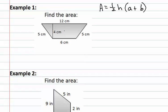As you can see, the height is labeled as four centimeters because it is at a right angle to the bases. This means that our two bases are the twelve and the six. It does not matter which one you label a or b.